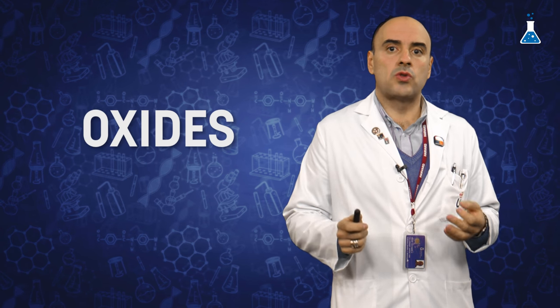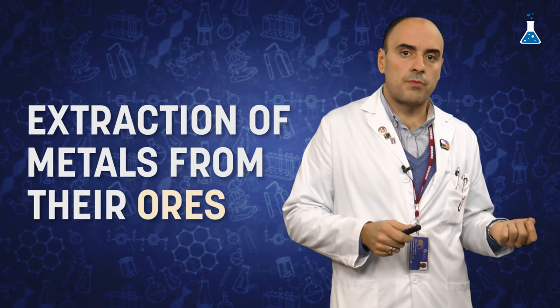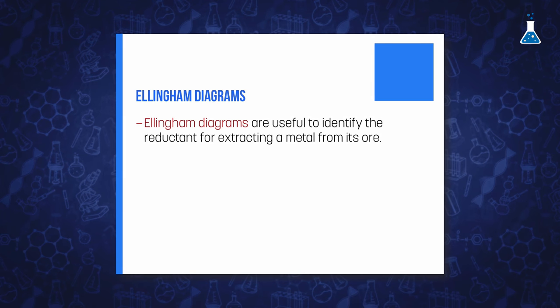Most metals are found in nature as oxides or sulfides, and only a few of them occur in nature as their elements. Therefore, an important type of redox reaction is the extraction of metals by reduction. In order to choose the appropriate reductant and the necessary conditions to achieve the reaction, we employ the Ellingham diagrams.